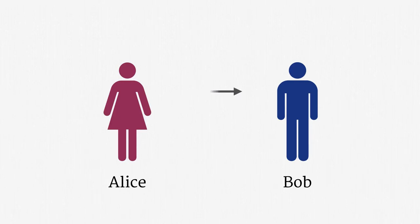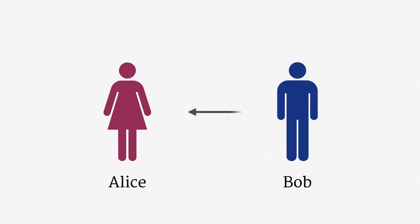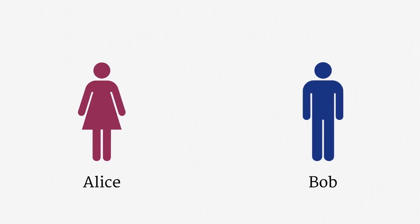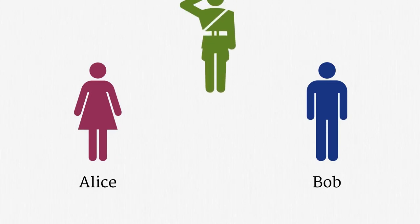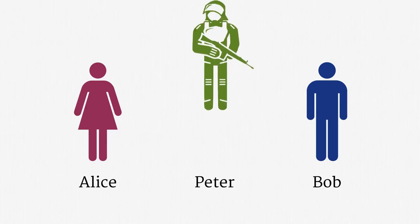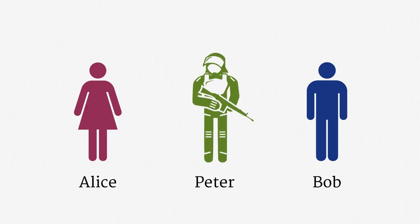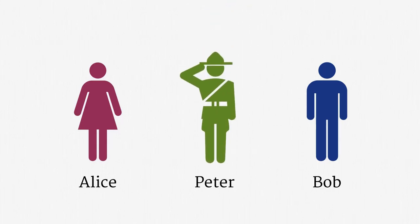Upcoming lectures will feature Alice and Bob communicating initially by phone, and later using more modern information technology. Since the police will be seeking access to Alice's data and Alice and Bob's communications, we need a police character. Let's call him Peter. Depending on your political views, perhaps Peter should look more like this. But let's stick with the friendly looking police officer.